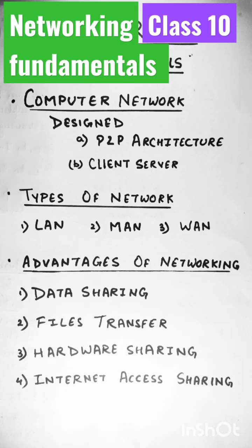A computer network is a collection of computers and other hardware components interconnected by communication channels that allow sharing of resources and information. Computer networks are designed with the help of the following architectures. The first is peer-to-peer (P2P) architecture, in which all computers have an equal status.